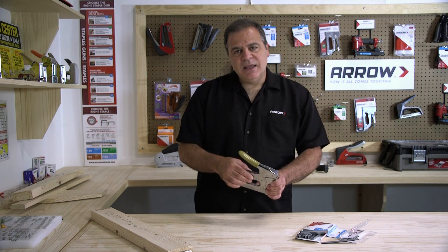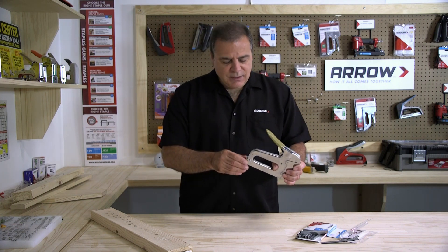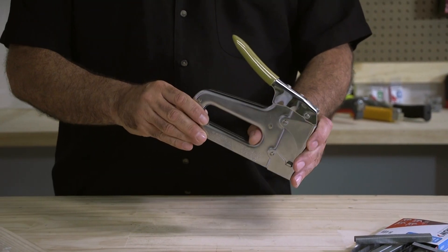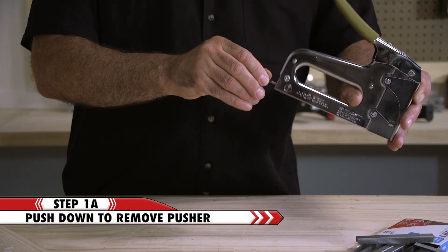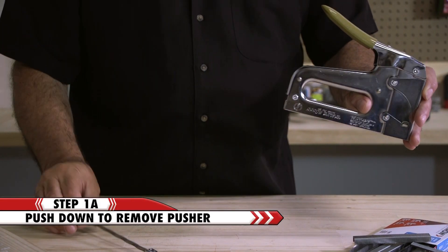The T50 PBN has a rear load magazine. In order to load this tool, you first need to remove the pusher by pushing in to unlock and sliding it out of the tool.